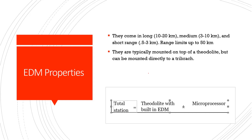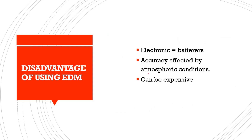EDM properties include different range classes. The longest range is around 10 to 20 km. Medium range is around 5 to 3 km. Short range calcium is around 0.5 to 3 km. For maximum range, this can be 50 km. The total station is a theodolite with built-in EDM plus a microprocessor. A disadvantage of EDM is the electronic battery system, and accuracy is affected by atmospheric conditions. It is also expensive.